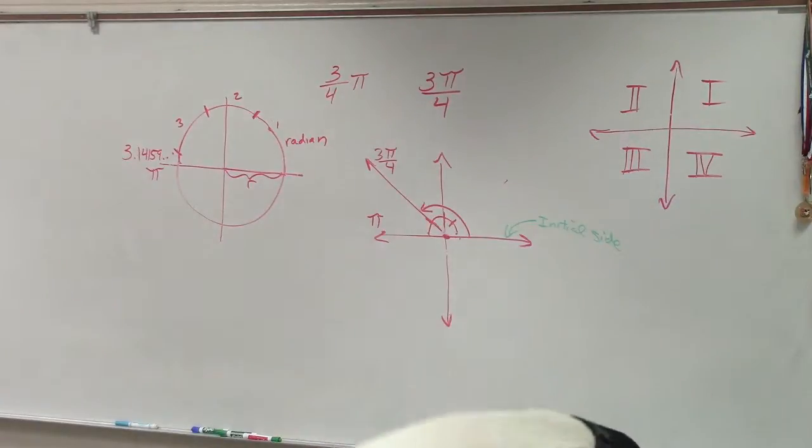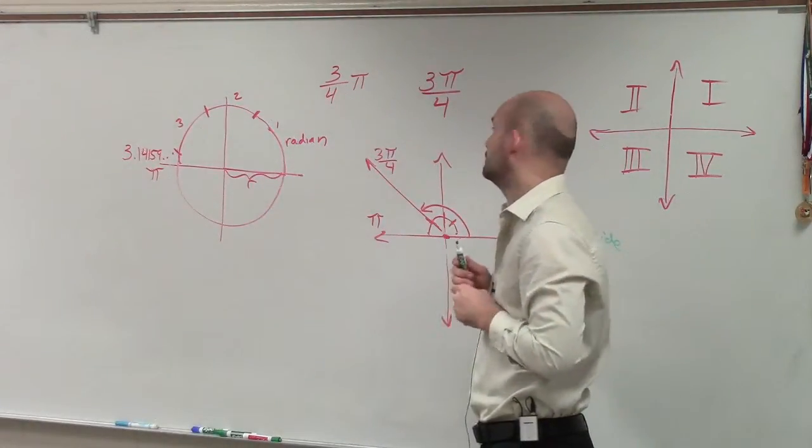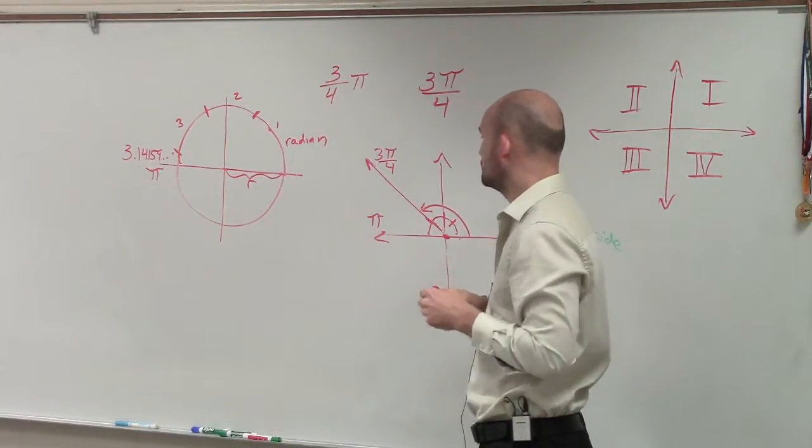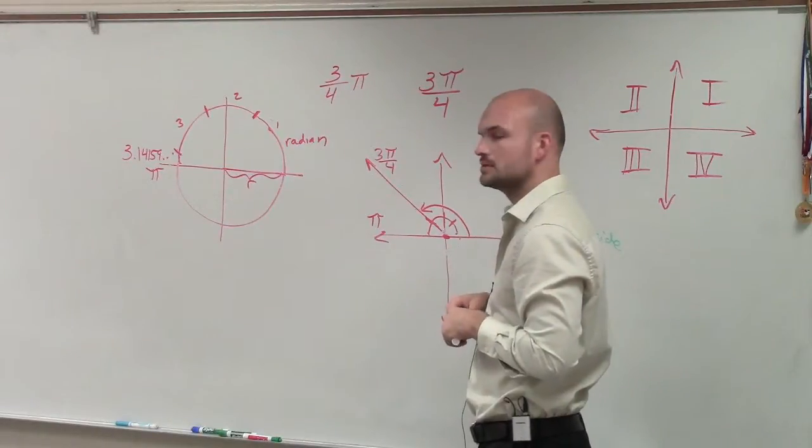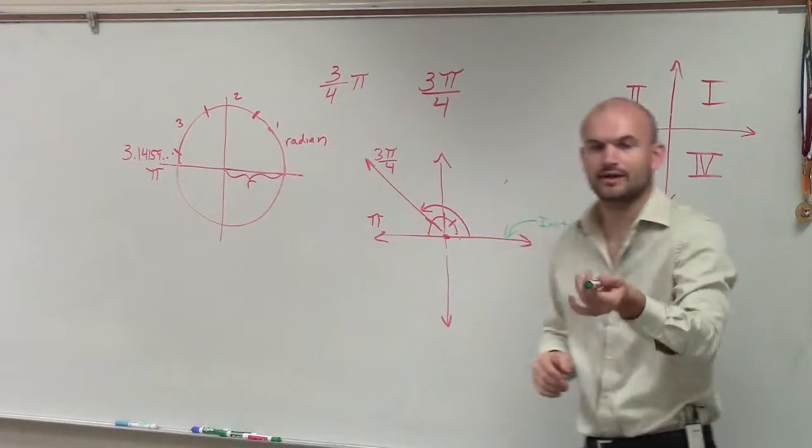Could you also do it because 2π is the other side? So if you do 4π, you wrap around twice and then split the top in fourths. Is it the same thing? You mean 2π going all the way around? I don't understand.